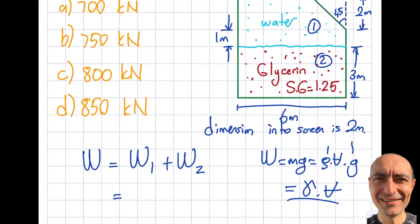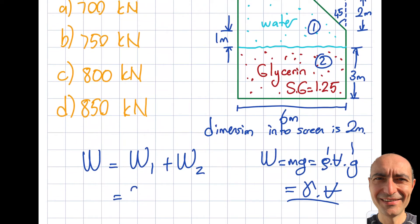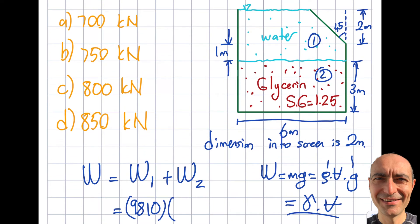The first weight uses the specific weight of water, which is 9,810 N/m³ — given to you in the FE reference manual. The height is 3 (that's 2 plus 1), the width is 6, and the depth into the page is 2. So Weight 1 equals 9,810 times 6 times 3 times 2.